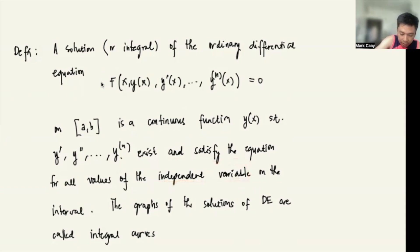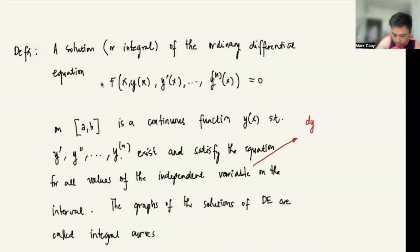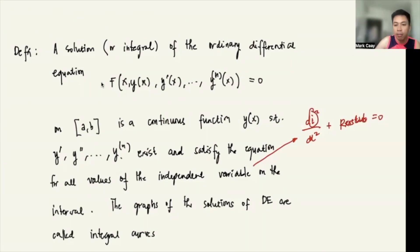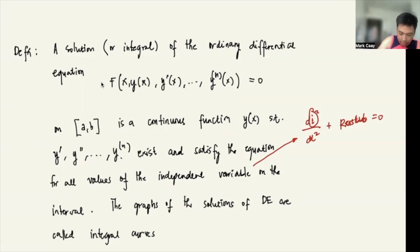So what is the independent variable again? For a differential equation, the independent variable — for example, if we have an equation like cos sin t, omega t equals 0 — here, i is the dependent variable because it is being differentiated, and that is with respect to t. So t here is the independent variable. The graphs of the solutions of differential equations are called integral curves.